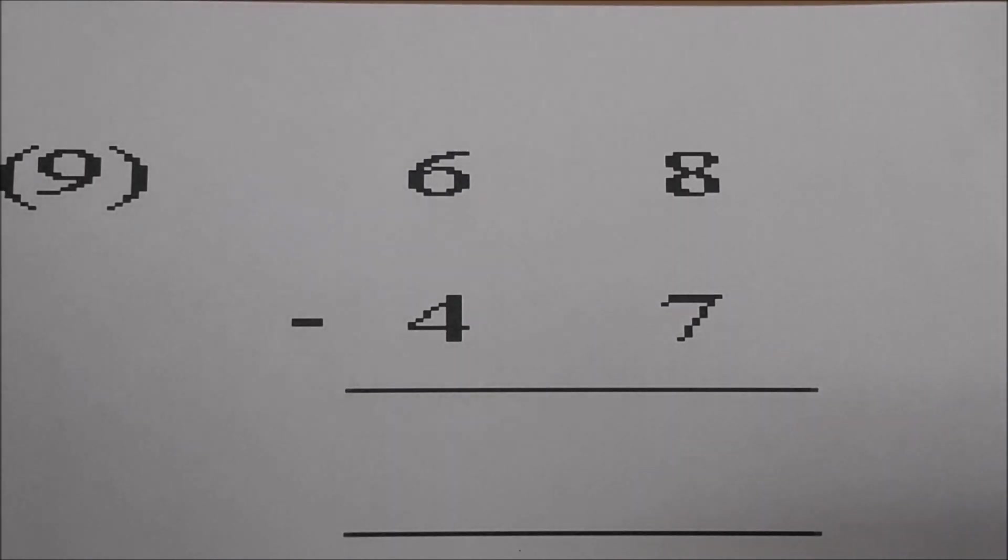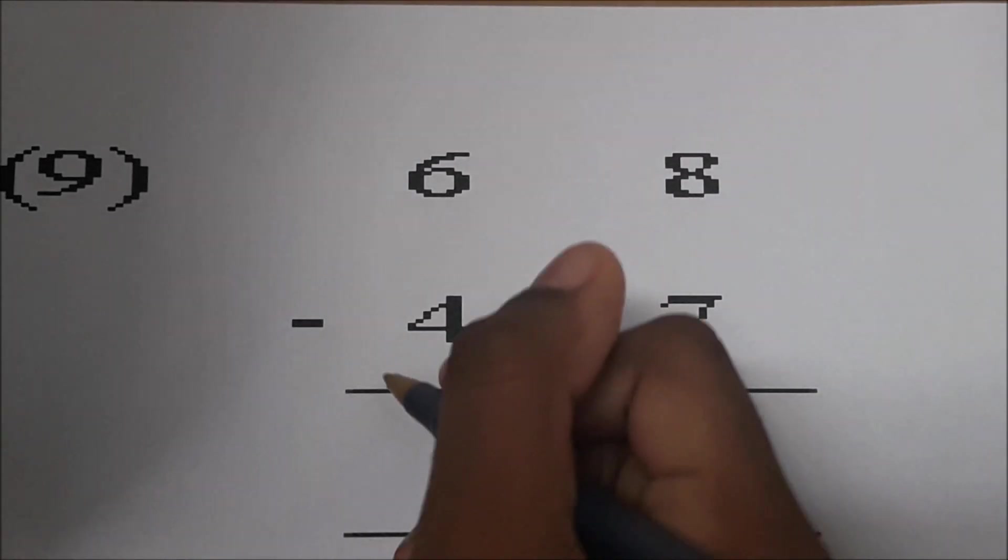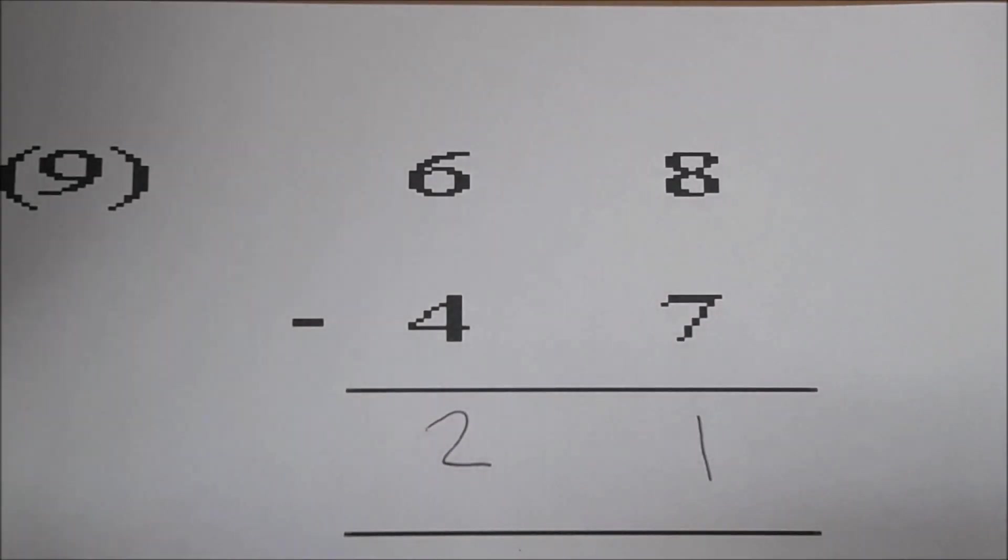Number nine. What are you subtracting? Sixty-eight take away forty-seven. Go ahead and work it Sky. Say what you're doing. Okay. Eight take away seven is one. And six take away four is two. Twenty-one. Very good. No renaming. Straightforward. Excellent job.